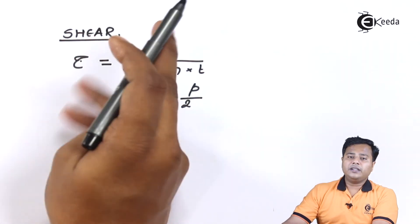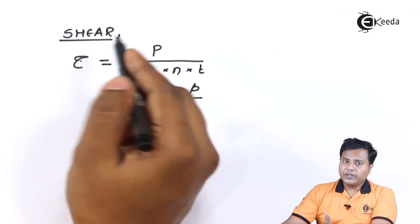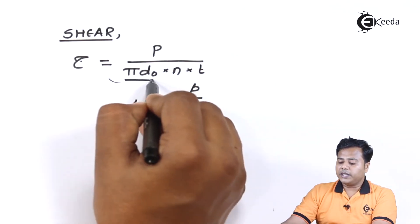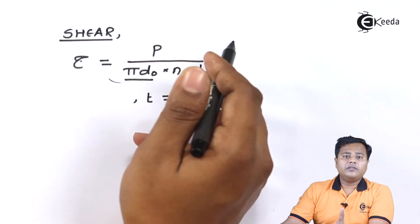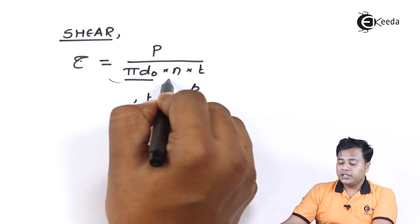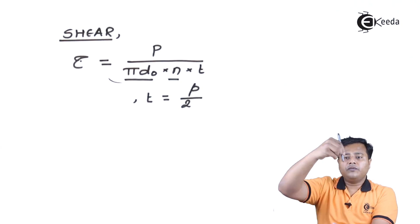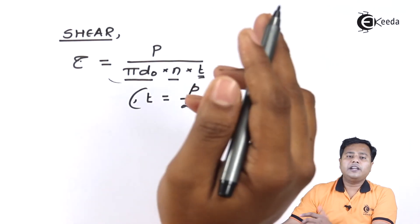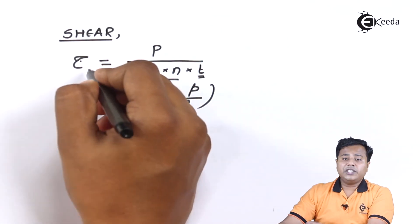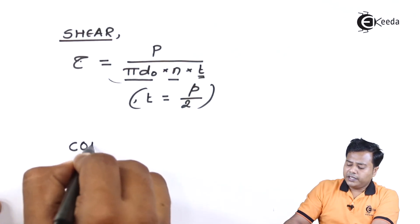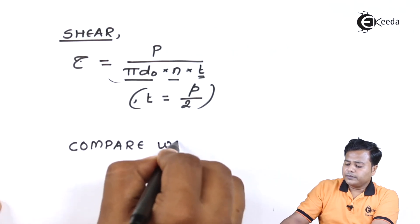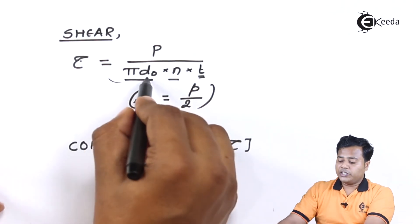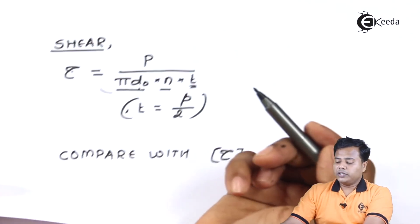We also check the nut for crushing stress: sigma crushing equals the axial load divided by the area of cross-section based on outer and core diameters and number of threads, compared against the allowable stress. Additionally, the shear factor comes into picture for the nut — shear stress equals axial load divided by the projected area undergoing shear, which is the circumference times number of threads times a factor T equal to pitch divided by 2. If it fails, we go back, change the dimension, and verify again.